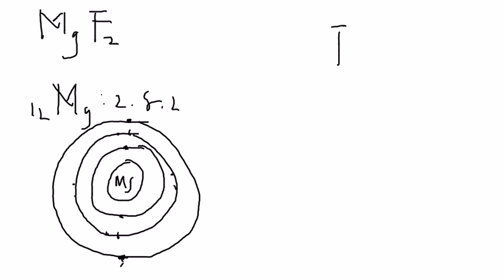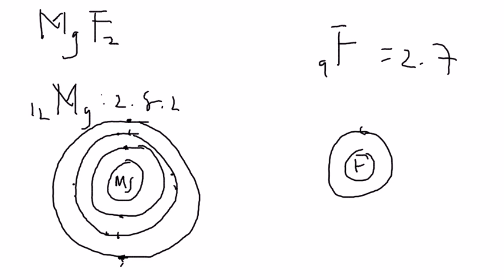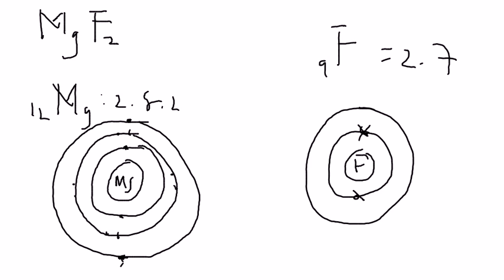For fluoride, we have 9 protons, so the configuration is 2, 7 — meaning 7 valence electrons at the outermost layer. When drawing fluoride, we use crosses because it's a non-metal. As a habit: non-metals use crosses, metals use dots.